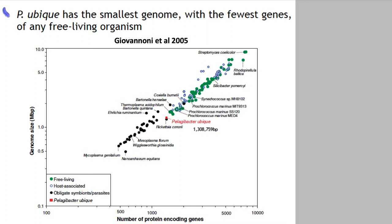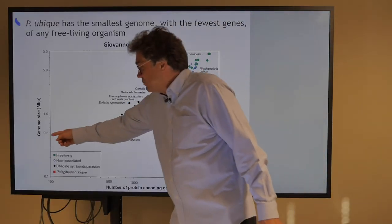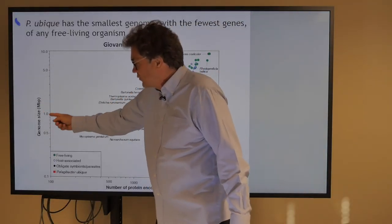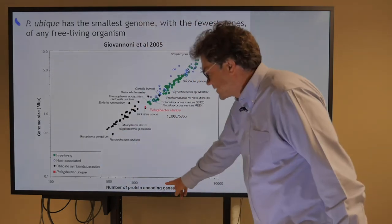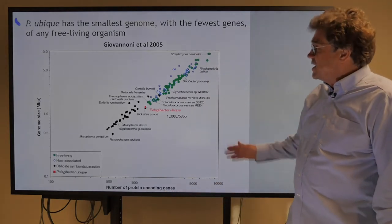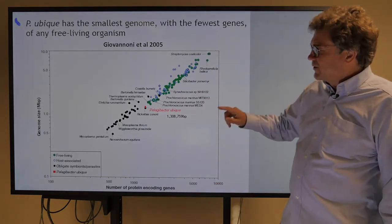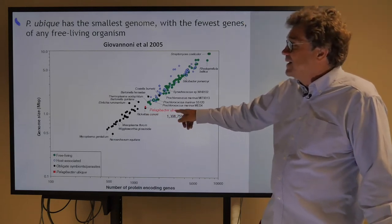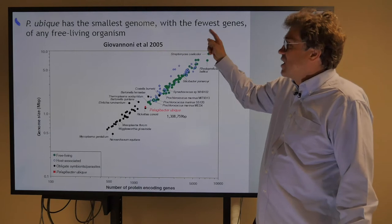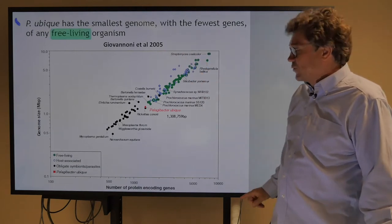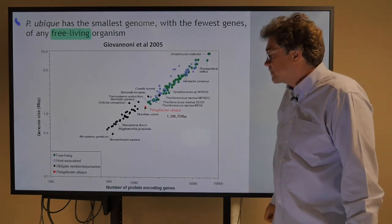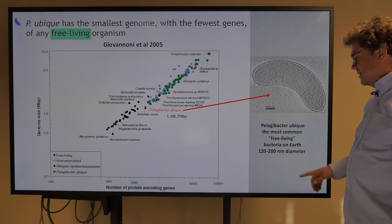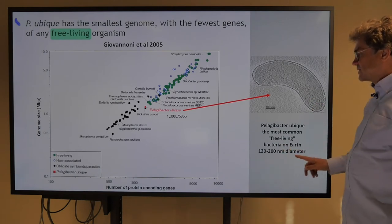Let's look at some of the smallest organisms on Earth. You can judge them by genome size on the y-axis in mega base pairs — here's one mega base pair, five mega base pairs — and the number of protein-encoding genes on the x-axis. These are bacteria for the most part. There's one particular organism called Pelagibacter ubique — it has the smallest genome with the fewest genes of any free-living organism. It looks like a kidney bean and is the most common free-living bacterium on Earth.